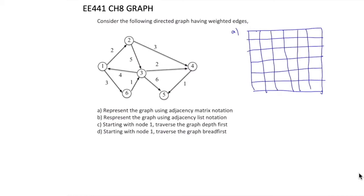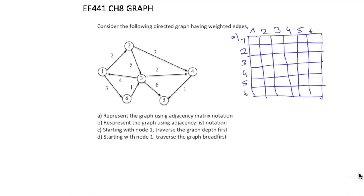The columns are numbered from 1 up to 6, and the rows are also numbered from 1 up to 6. For each entry, we will write 0 if there is no edge going from the node written in the row to the node written as the column. For node 1, we will write the edges going out from node 1, and for each one we are going to write the weight.